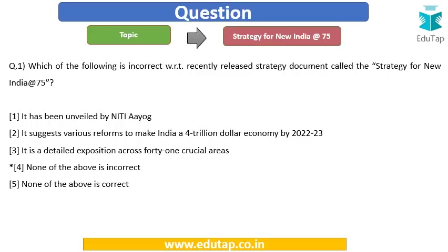We can now easily answer this question. The recently released strategy document has been released by NITI Aayog — correct. The statement regarding making India a 4 trillion dollar economy by 2023 is also correct. There are 41 crucial areas — also correct. So the correct answer is option number 4: none of the above is incorrect.